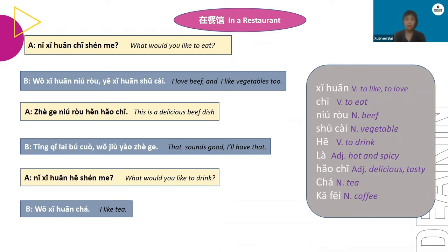Let's have a look at how to respond to 你喜欢吃什么? In this conversation, person B said 我喜欢牛肉 — I like beef. Can you tell me how to say 'I like vegetables'? 我喜欢蔬菜。